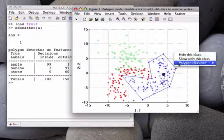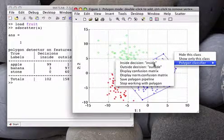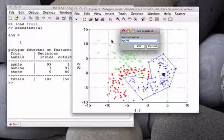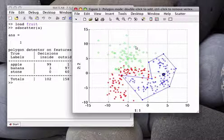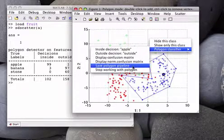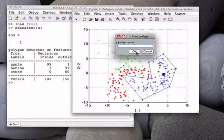You may change the name of the decisions from the scatter menu, or directly from the context menu, called by the right mouse button. Let's call Apple the points inside the polygon. Your polygon classifier may be saved in the MATLAB workspace and applied to new data.